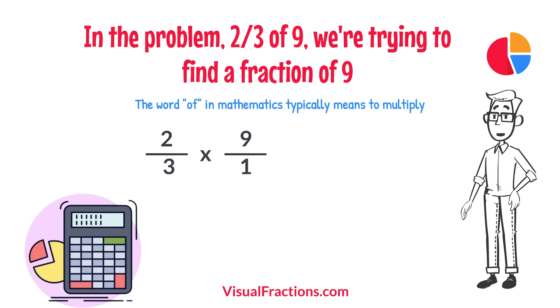Now, we proceed to multiply across. First, multiply the numerators, two times nine equals 18.